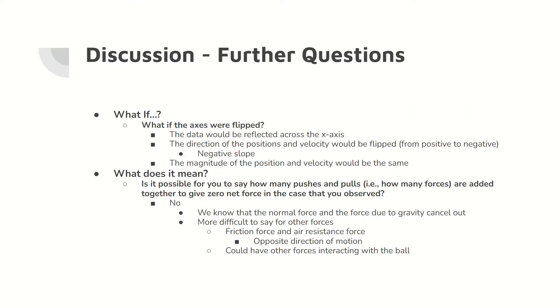If the axes were flipped so that the negative x-axis now is on the right side of the tracker axes, the data showing the graphical comparison slide would be reflected across the x-axis, with the data showing a negative slope of position versus time. As a result, the direction of the positions and velocity of the object would also be flipped in the negative x-direction. However, the magnitude of the position and velocity of the baseball would stay the same, so the trends would still persist.